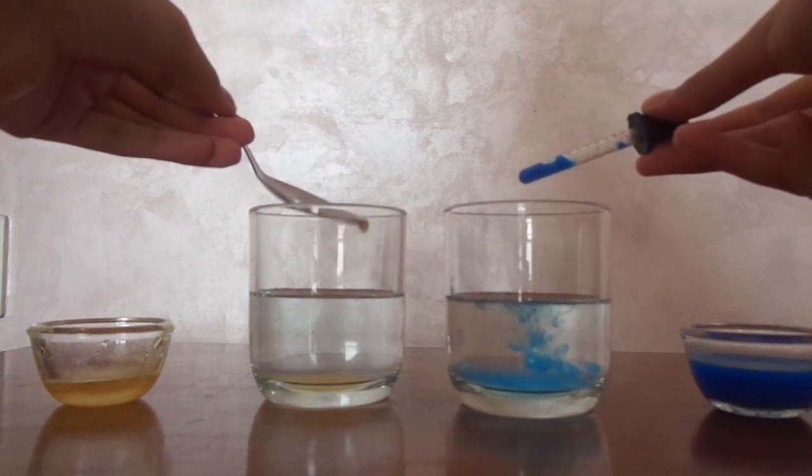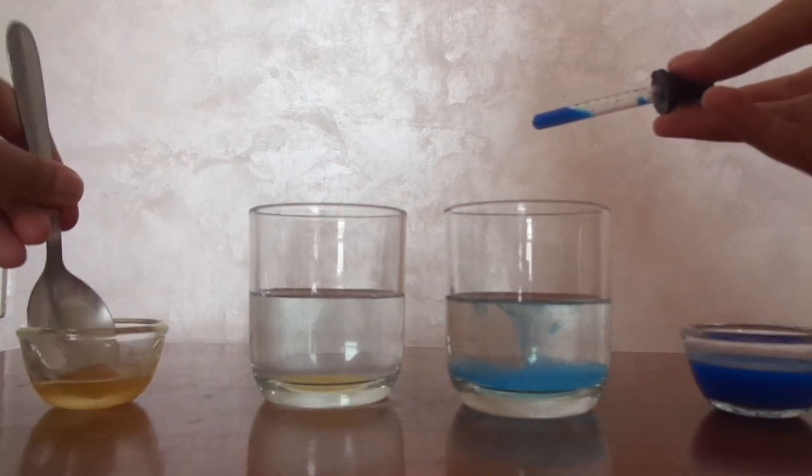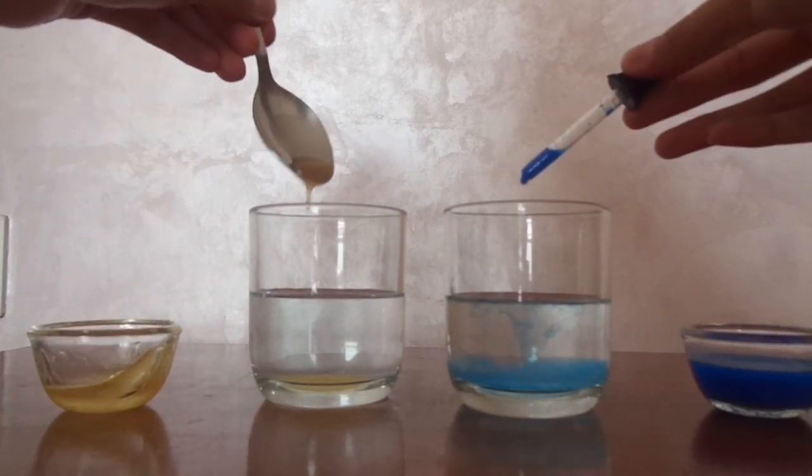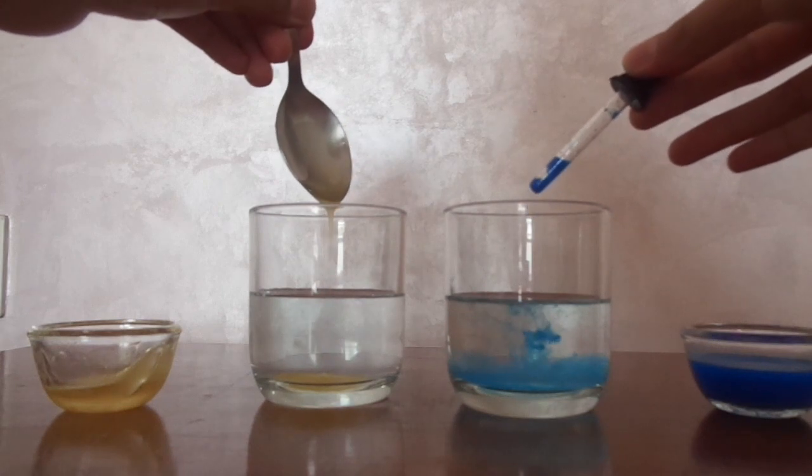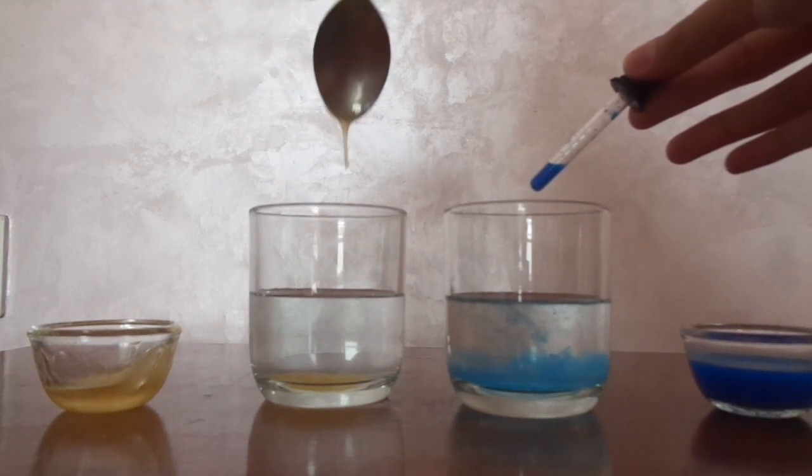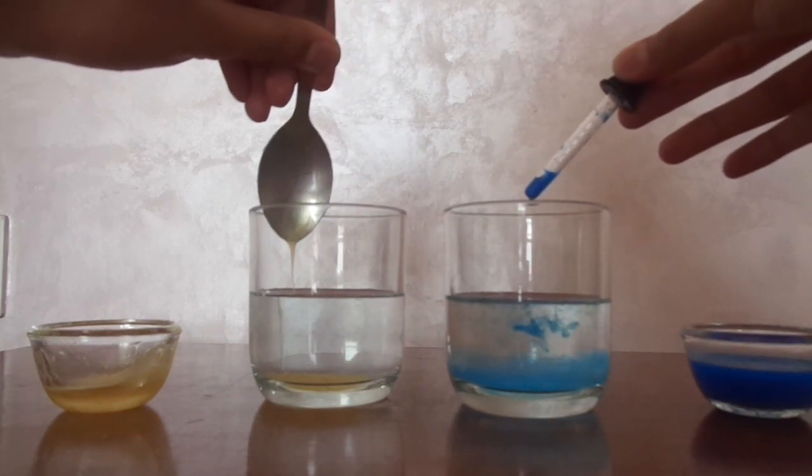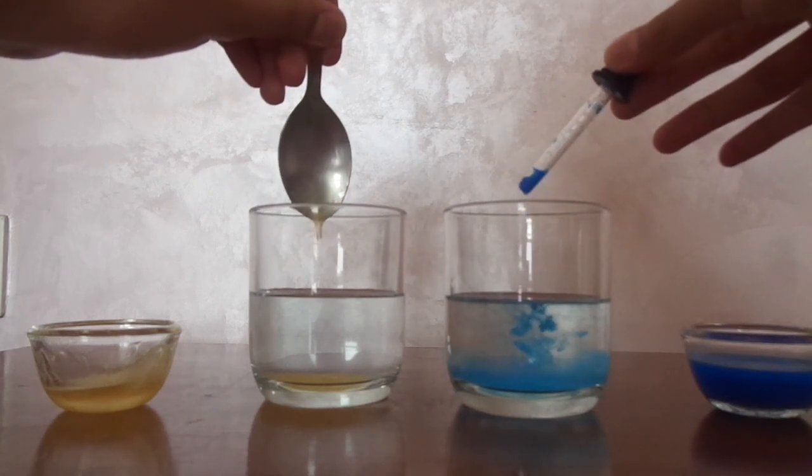Well there is a simple reason for this. The particles of the ink are not as closely packed. That is the ink is not as dense as the honey. So it is much easier for the particles of the ink to move about and mix with the particles of the water.